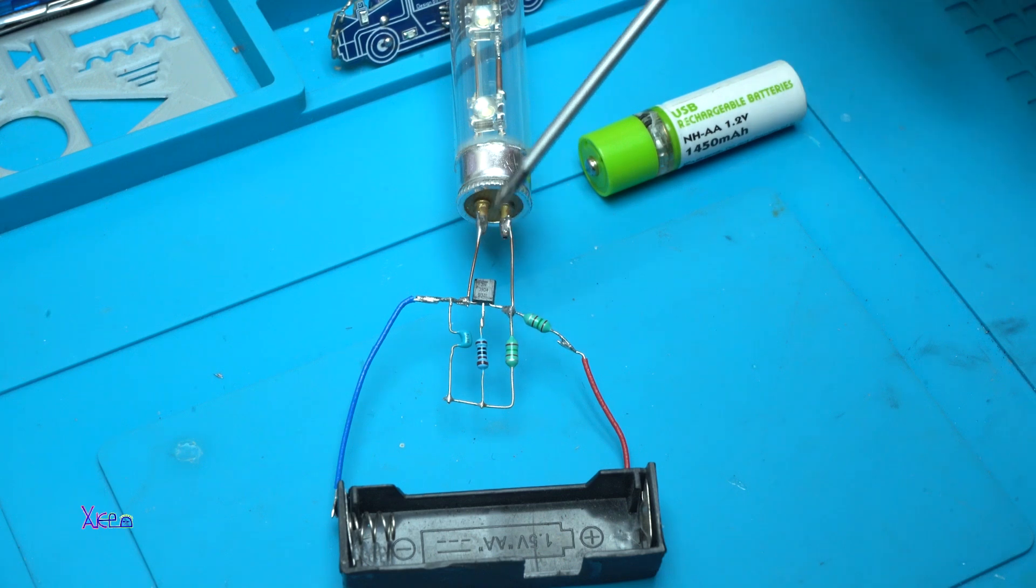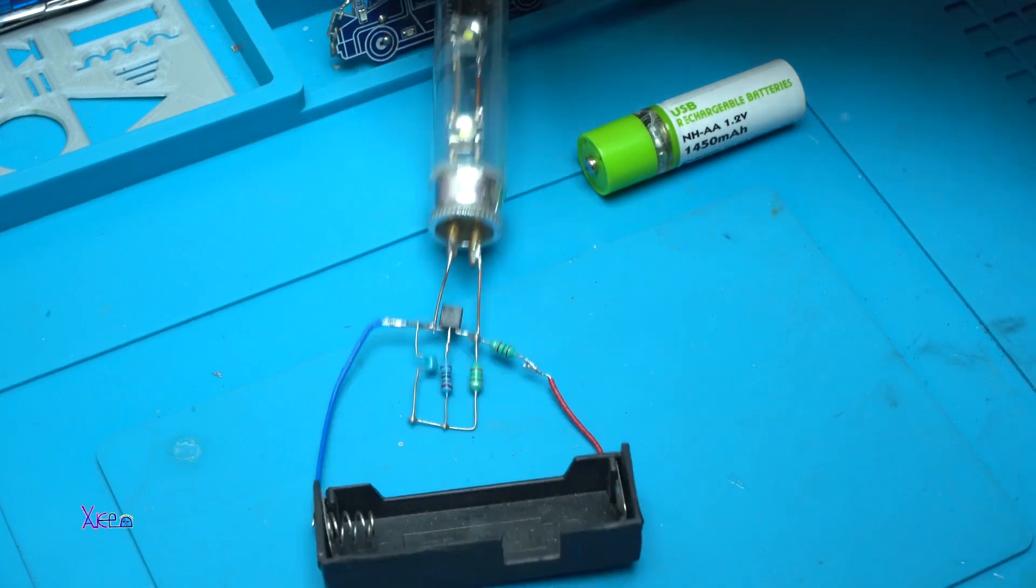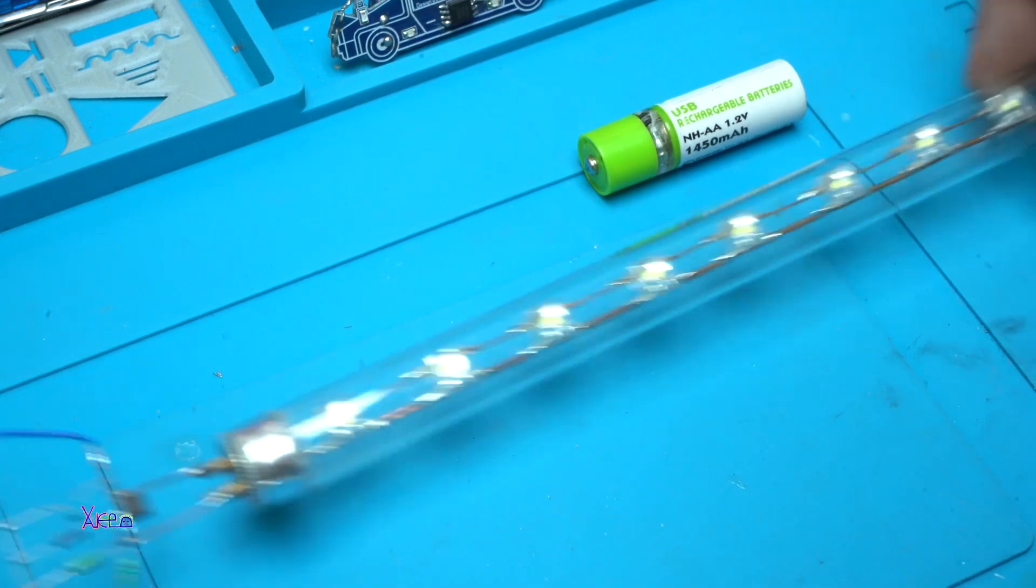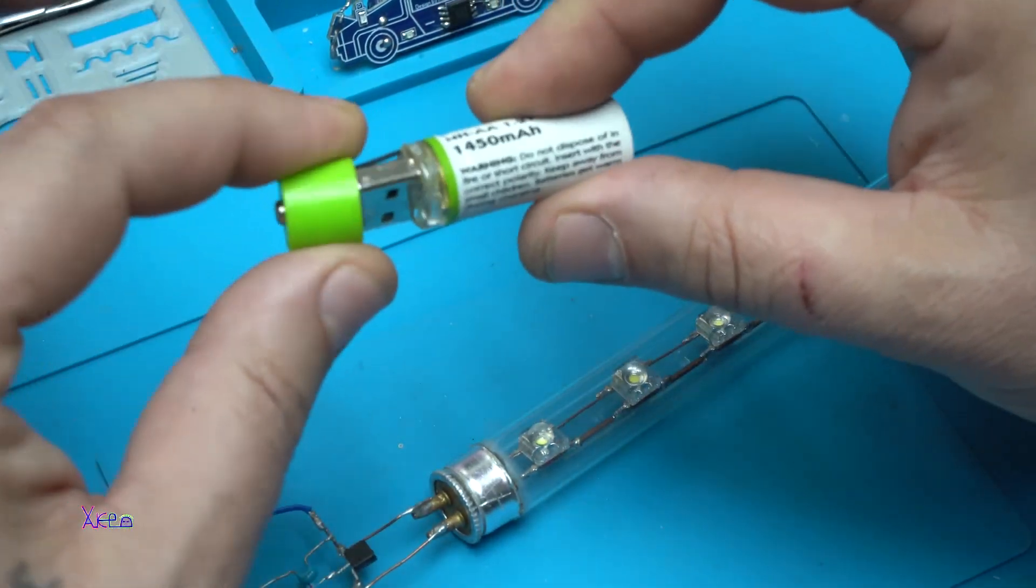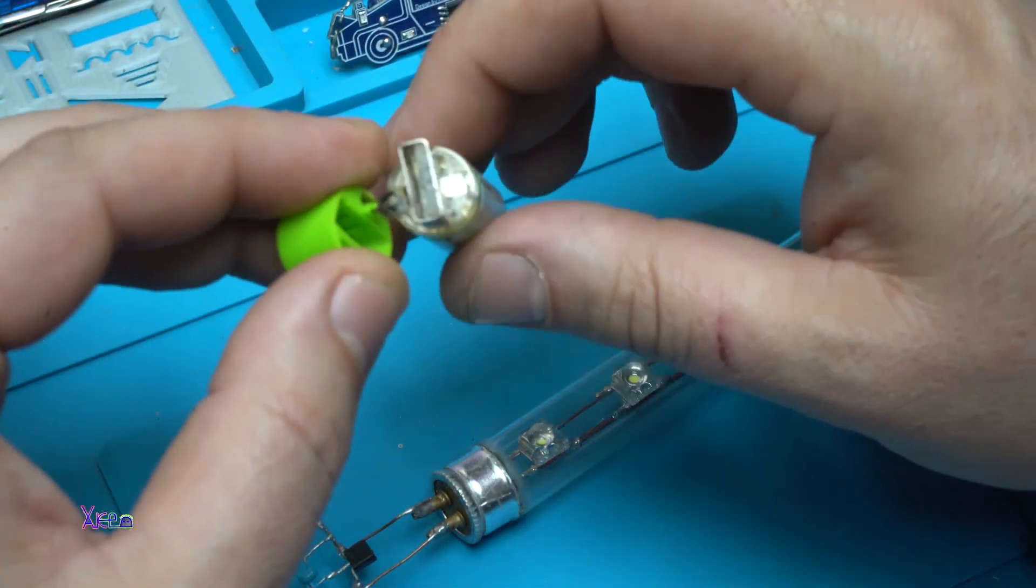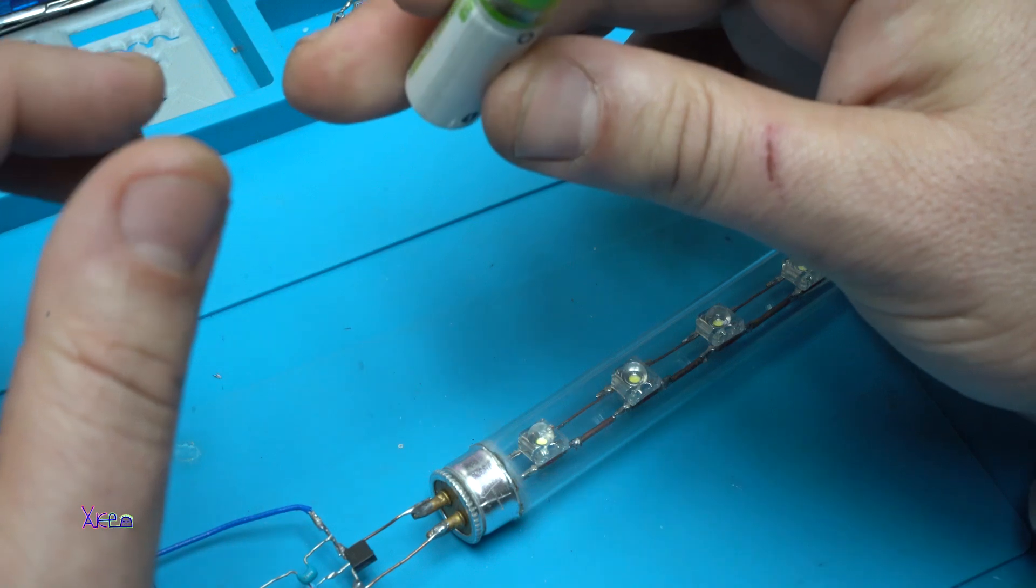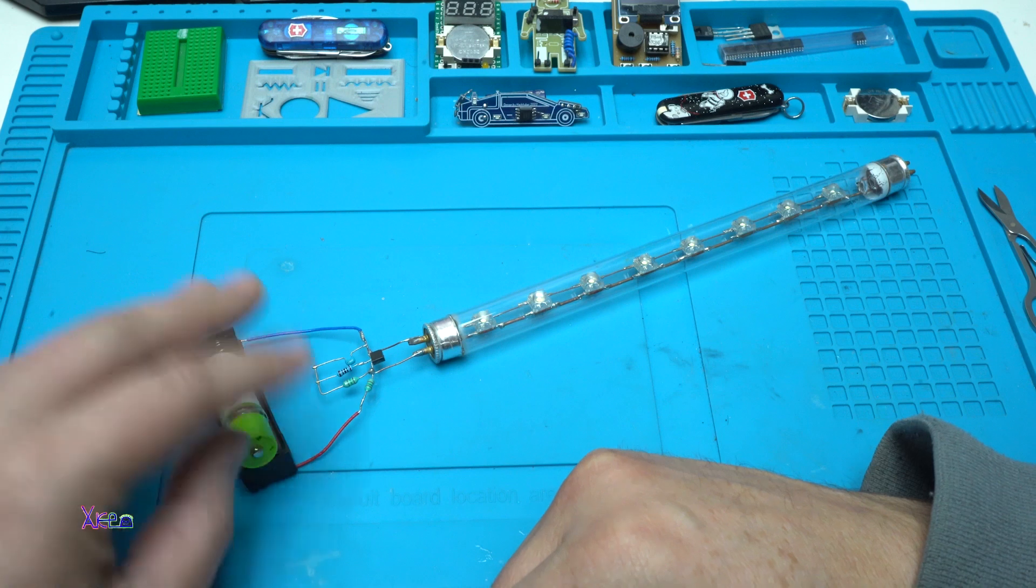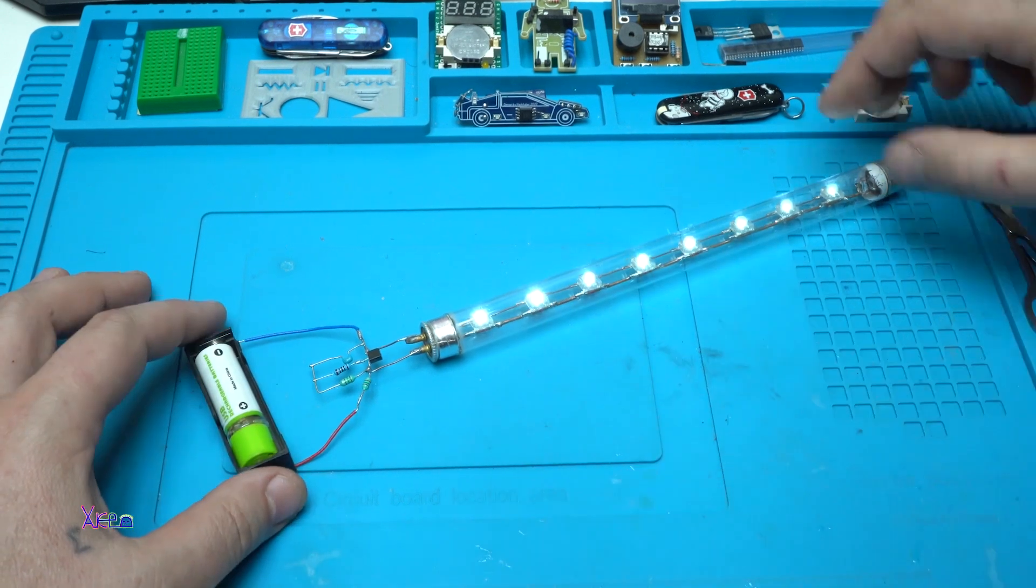That's it, it's a very simple Joule thief that will light up these nine piranha LEDs with this rechargeable 1.2 volts USB battery. Let's try it and it's working.